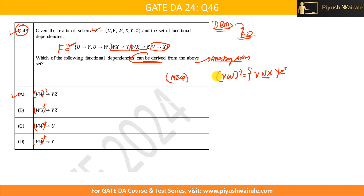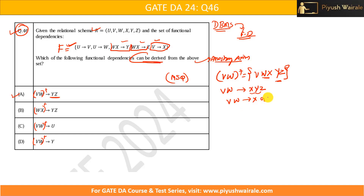We cannot use the dependency involving U since U is not present in the closure. So the closure of VW is {V, W, X, Y, Z}. For option A, VW determines YZ — since Y and Z are both in the closure of VW, this is valid. By the decomposition rule, VW can determine any subset including YZ, so option A is correct.